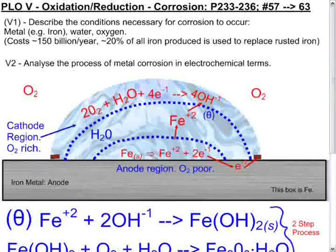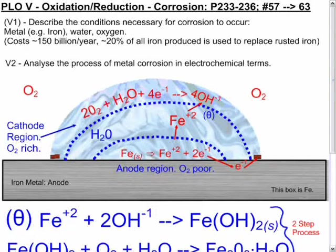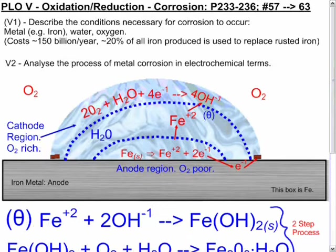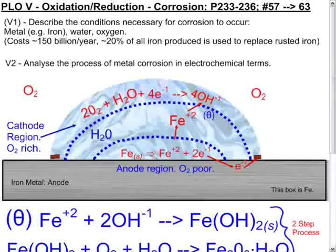As useful as iron is, the corrosion of iron has a major impact on the economics every year. Costs across $150 billion a year, approximately 20% of all iron produced is used to replace rusted iron.